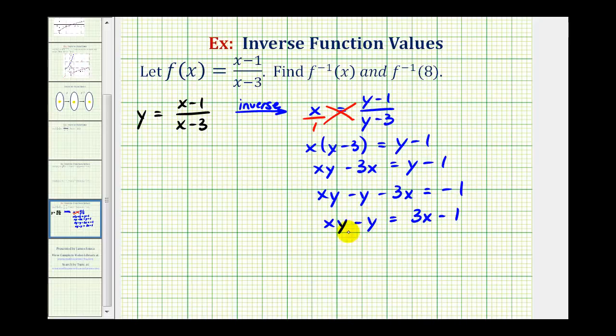To solve for y, we factor out the common factor y, leaving us with y(x - 1). Dividing both sides by (x - 1),